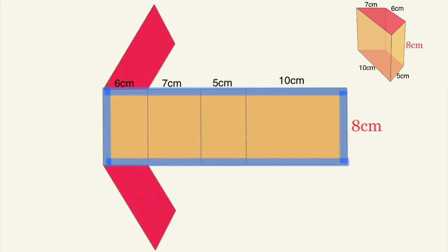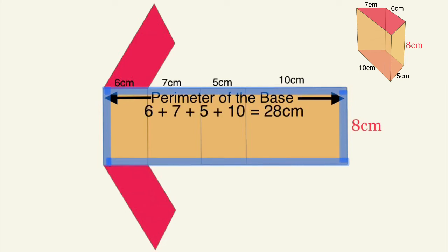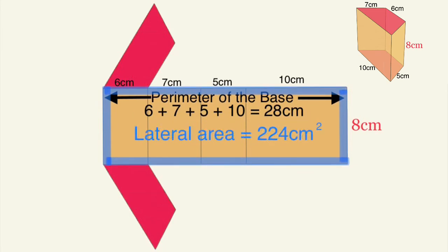One of them is the perimeter of one of the trapezoids, the perimeter of the base 6, 7, 5, and 10. If I add all of those together I will get 28 centimeters and the other dimension is 8 centimeters, so if I multiply 8 times 28 just like one rectangle I will get 224 square centimeters which is the lateral area, all of those faces combined.